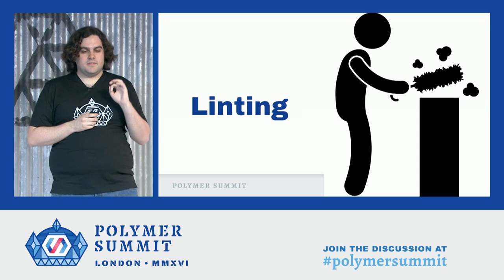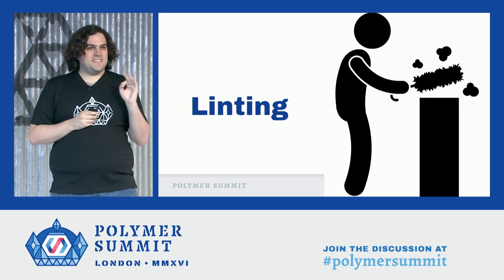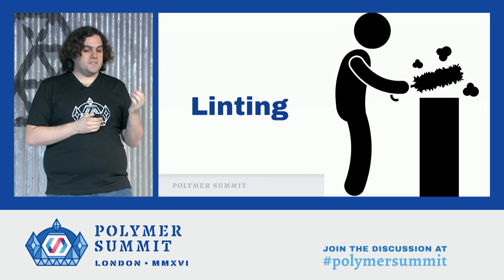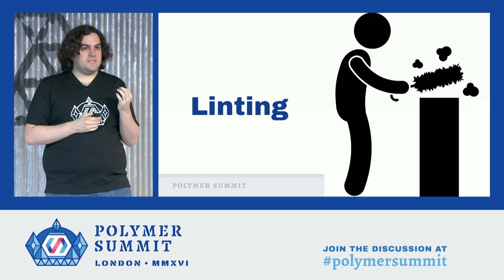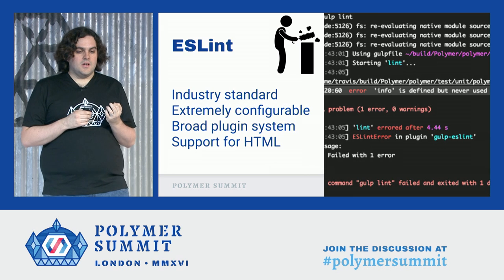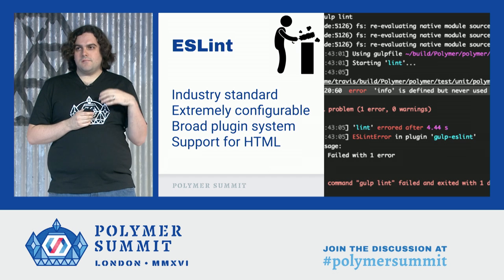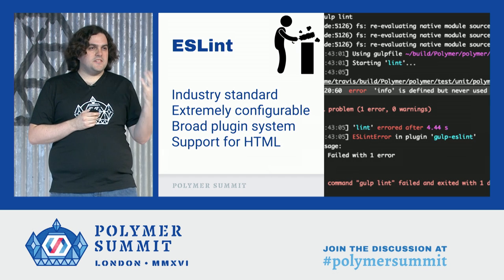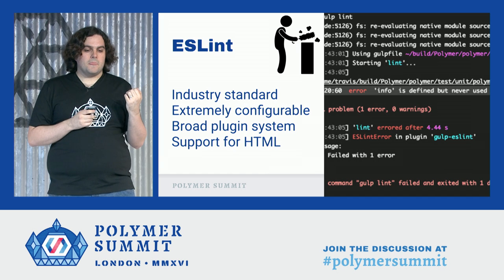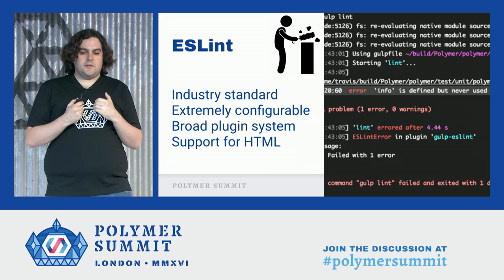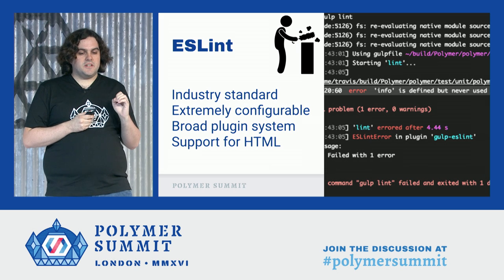Let's start with linting. Linting tools help you spot easy errors like misspelling a variable name or forgetting a comma. They can be integrated into your editor to help you spot mistakes before you even start your tests. The first tool I want to talk about is ESLint. ESLint is really an industry standard — it's extremely configurable, has a broad plug-in system, and most importantly, it's compatible with our use of HTML imports by way of the HTML plug-in.